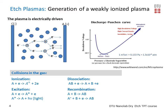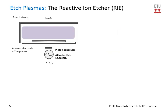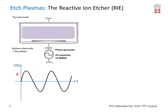Here is an example of an etching system — the Reactive Ion Etcher, also called the Parallel Plate Capacitively Coupled Reactive Ion Etcher. It is a quite simple system. It consists of a top electrode connected to the sides, which is grounded, and a bottom electrode connected to an AC potential. This AC potential varies over time, very fast at 13.56 MHz — in the radio frequency range, so we also call it the RF potential.